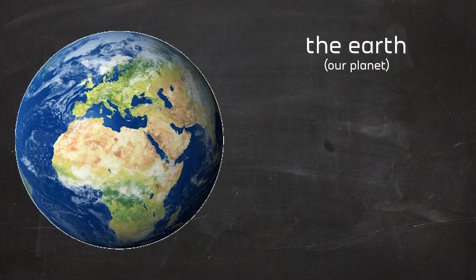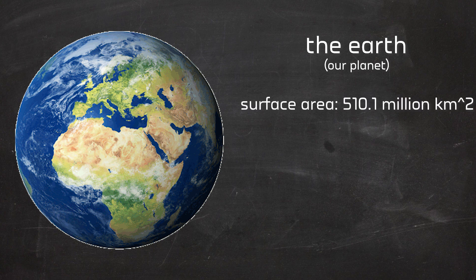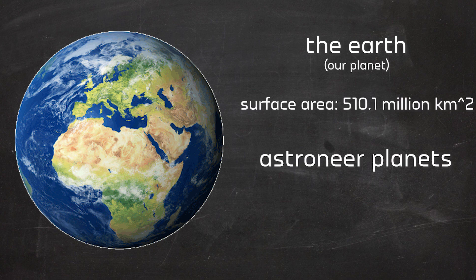To put this all into perspective, the Earth, you know, OUR planet, has a surface area of 510.1 million kilometers squared. These planets' surface area is 0.0012% that of Earth's. To show you REALLY how small these planets are, we'll compare them to a much smaller object from our solar system instead, Pluto.